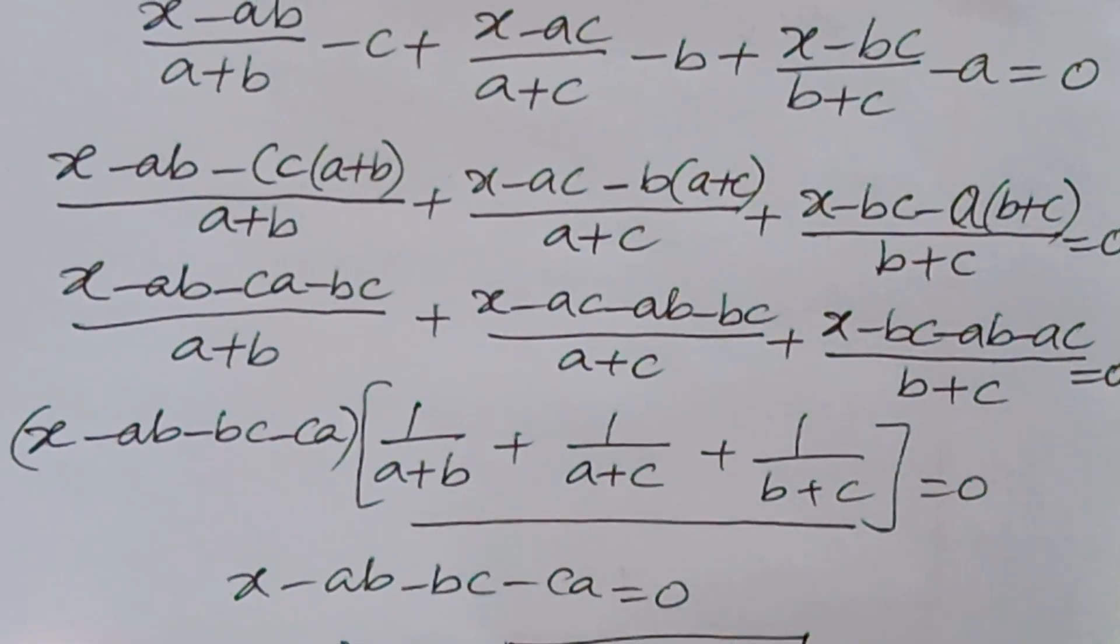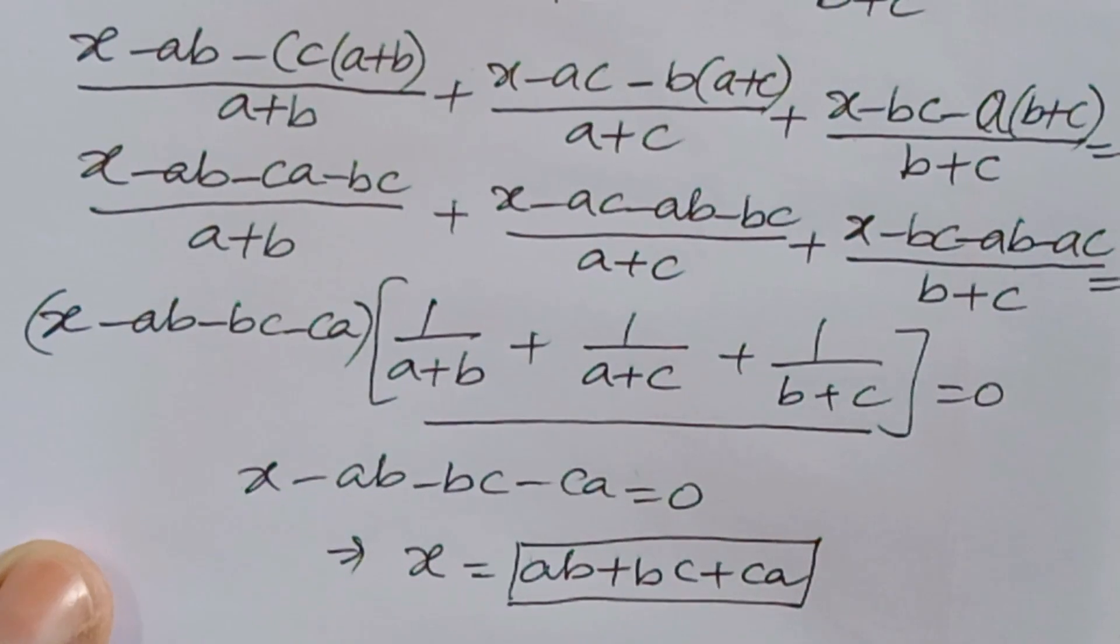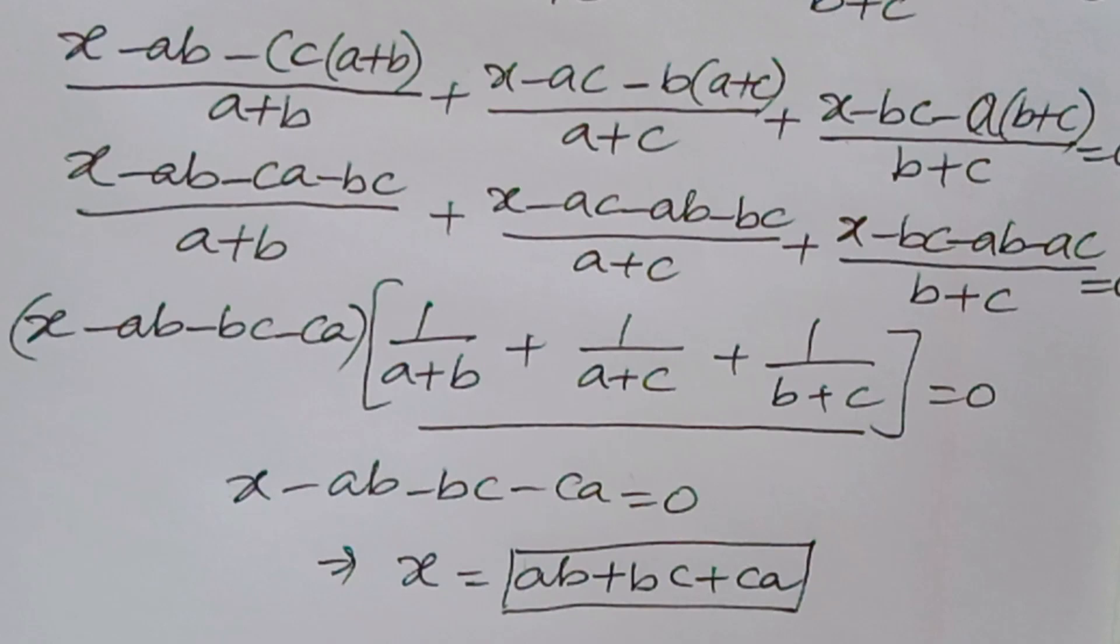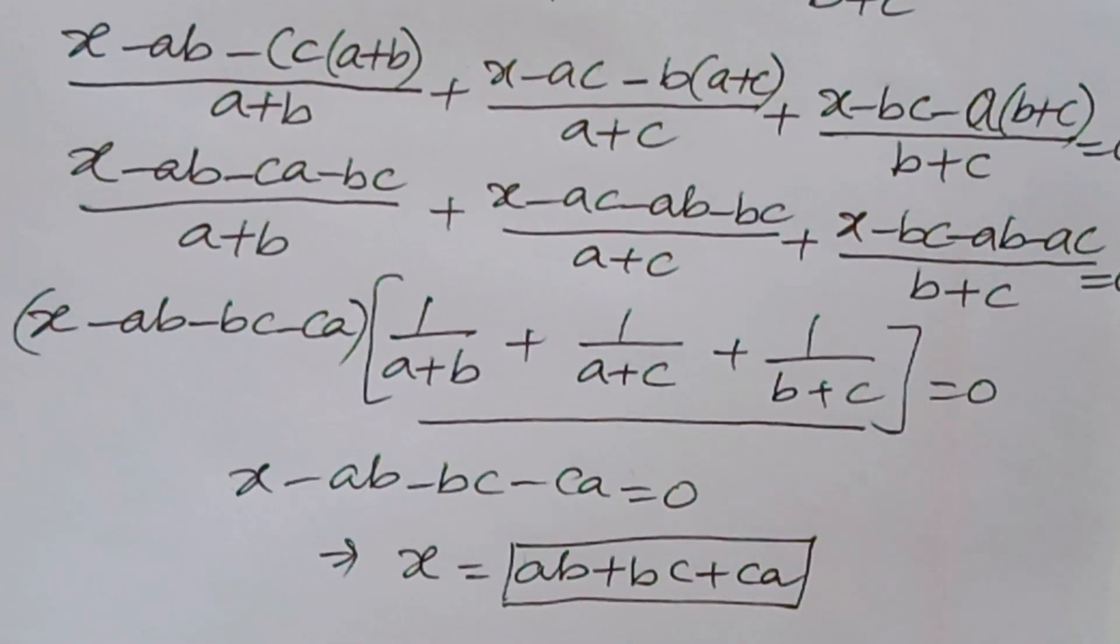So the value of x should be ab + bc + ca. I hope you understood the problem. Thank you for watching Ion CGMax. If you like the video, subscribe to the channel and share the video to your friends. Once again, thank you for watching.